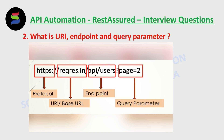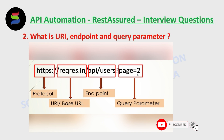Then we have the query parameter. The query parameter is the condition or filter for which we are trying to get data. For example, here we are trying to fetch data for page 2. If you want to fetch data for page 3, you would use page equals 3. This is known as a query parameter.